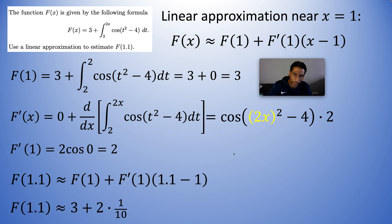1.1 minus the 1 is a tenth, 0.1. So we have 3 plus 2 times the tenth, which is two tenths or one fifth, which is as a decimal, 0.2. 3.2 is our answer.